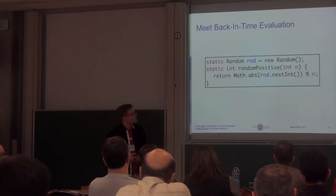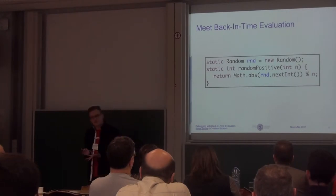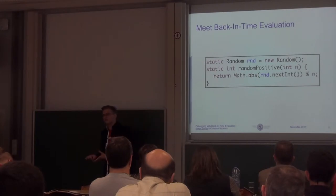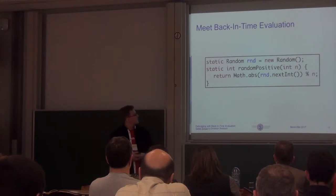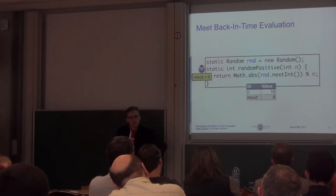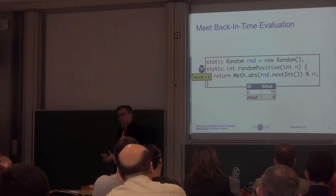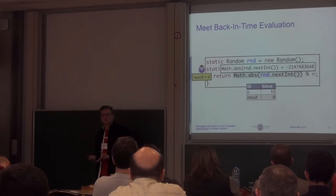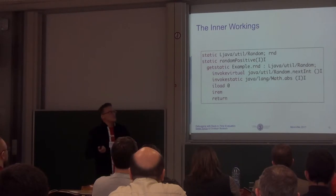So we need an approach where we can have back-in-time evaluation without the cost that omniscient debugging brings. This is where our approach comes into play. We call it back-in-time evaluation. It is designed to integrate into your regular debugger, which is integrated into your IDE, so there is not much overhead for using or setting it up. The basic idea is: instead of re-executing the code for expression evaluation, we return the value that was previously returned by that expression. How do we do this? Basically, we cheat.